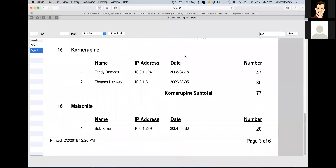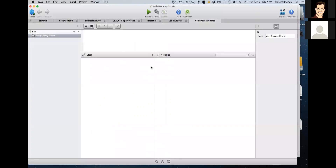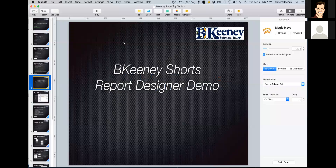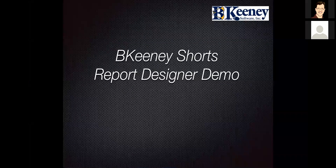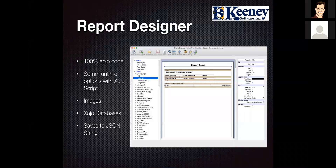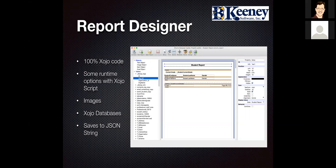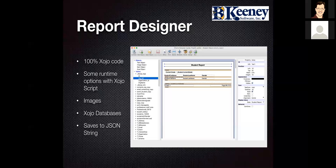We've demonstrated that you can create a report, have external report files that don't have to be compiled into your application, we've seen the report designer on desktop generate reports, and we've had it generate reports on web edition as well. The people using this have given some really great positive feedback and it's really only been out three or four weeks now, so it's going to grow as we use it more. To recap: it's 100% Zojo code, we've got runtime options with Zojo script, you can do images — loading from disk statically or via database — and it works with Zojo databases and saves to a JSON string. Zojo databases right now are Postgres, MySQL, SQLite, and CubeSQL. I see no reason why SQL Server and Oracle couldn't be in there, but it's just more a matter of being able to test it.